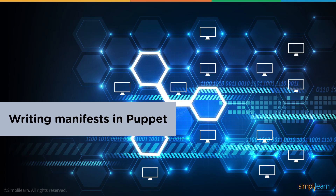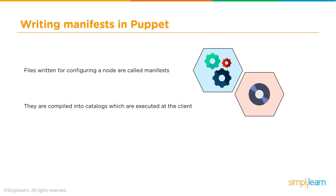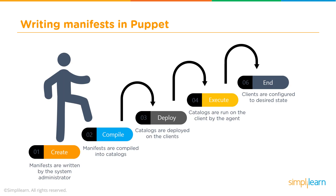Let's look at how you write a manifest in Puppet. Manifests are designed to define in code how you configure a specific node in your server environment. They are compiled into catalogs which are then executed on the client. Each manifest is written in Ruby with a .pp extension. There are five key steps: 1. Create your manifest — written by the system administrator. 2. Compile your manifest into a catalog. 3. Deploy — the catalog is deployed onto the clients. 4. Execute — the catalogs are run on the client by the agent. 5. End — clients are configured to a specific desired state.